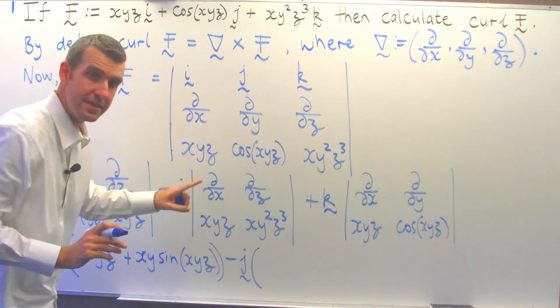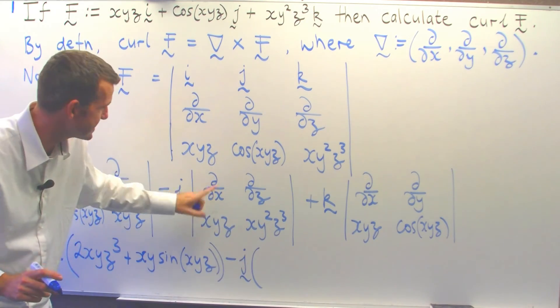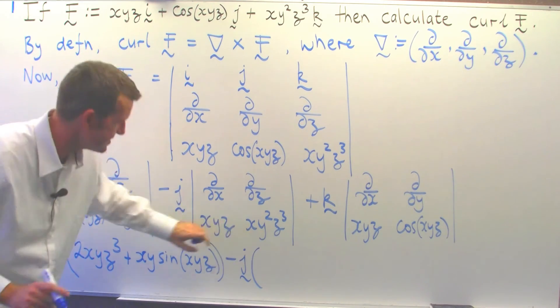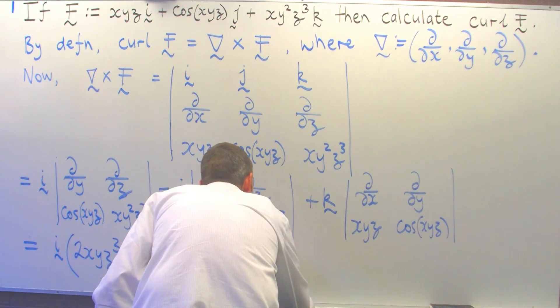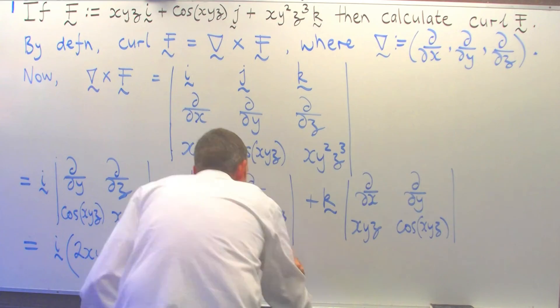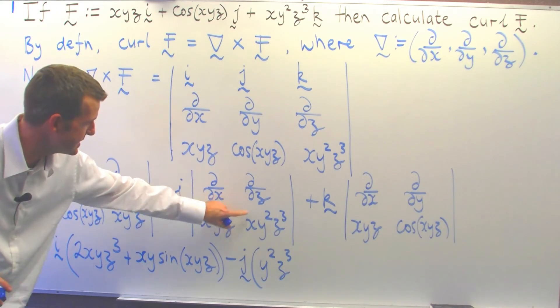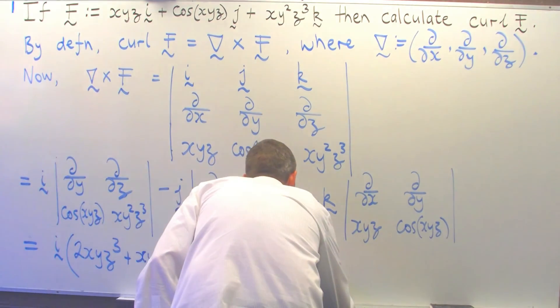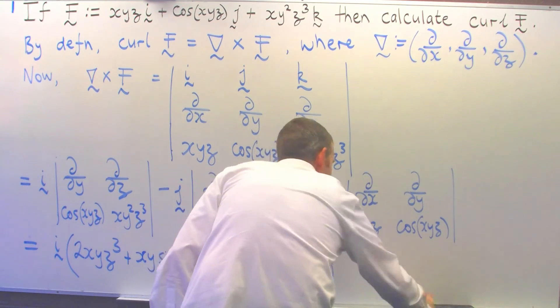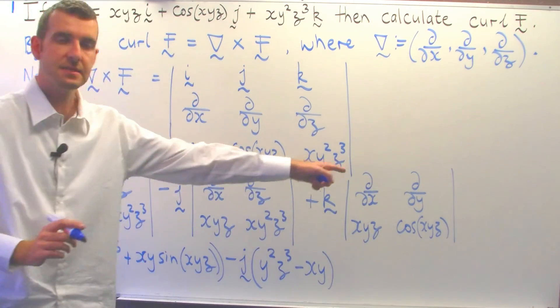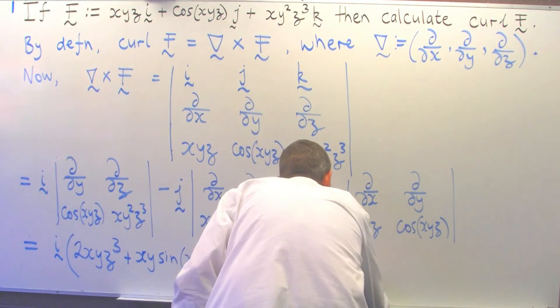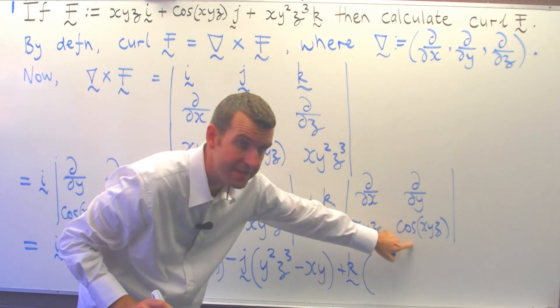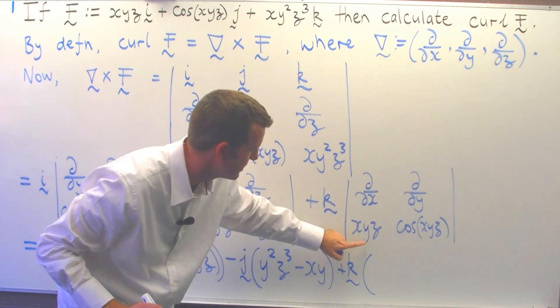It's again the cross multiplication, but remember we're not really multiplying here. So d/dx of this will be y²z³ minus d/dz of this. And lastly we continue on, d/dx of this minus d/dy of this.